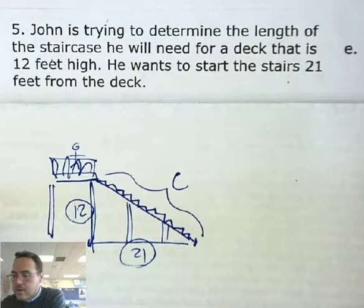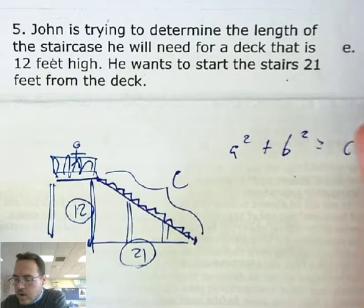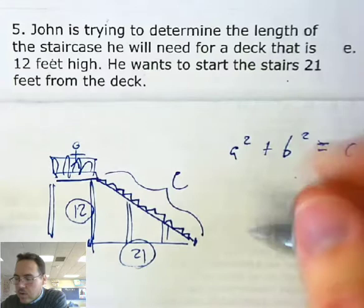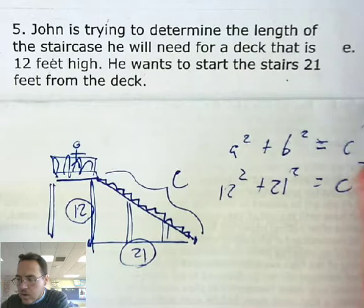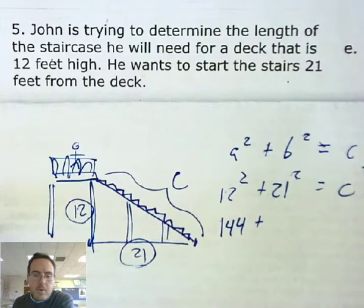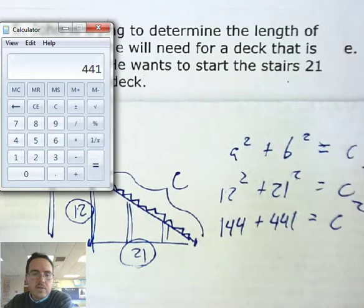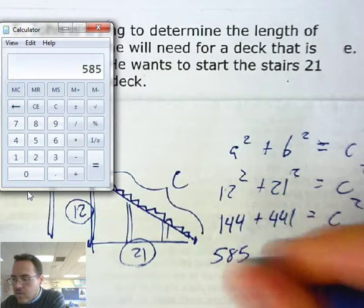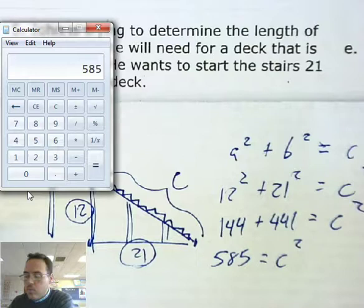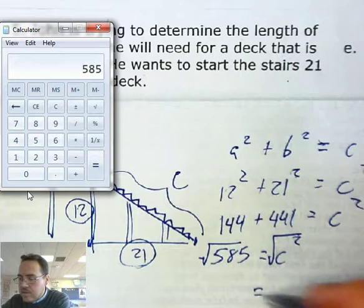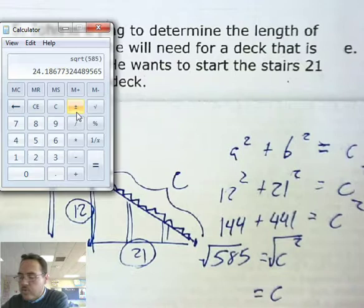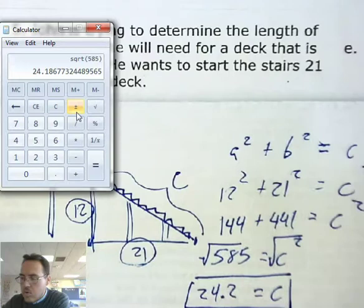So a² + b² = c². They gave us the leg and the height, so: 12² + 21² = c². That's 144 + 441 = c², which means 585 = c². Taking the square root of both sides, c equals 24.18, so we'll say 24.2 feet. That's the length of the staircase.